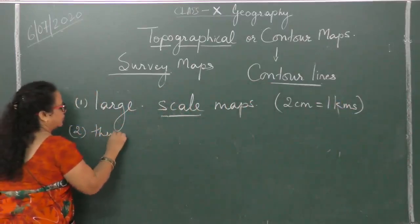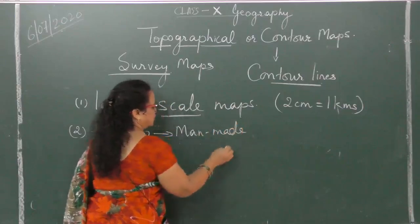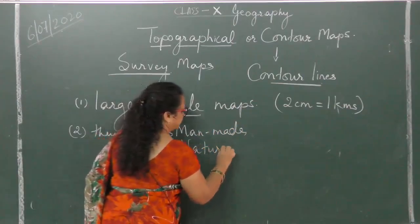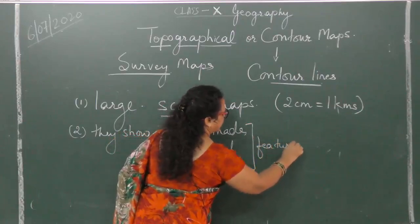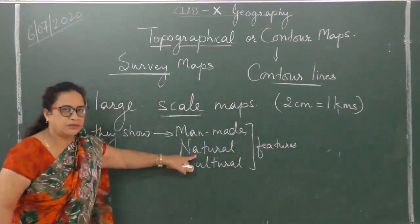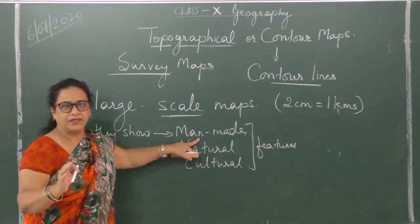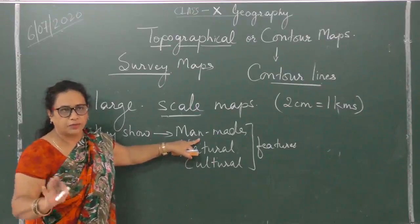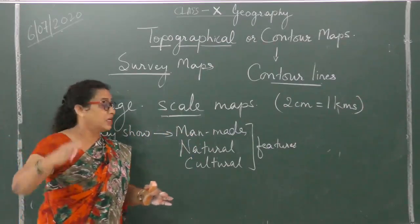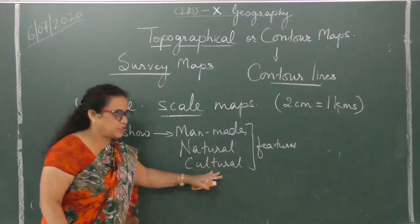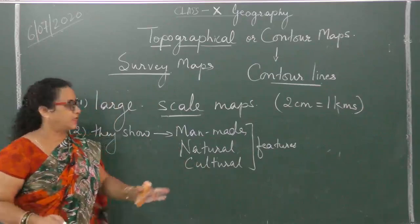These maps show three things: man-made, natural, and cultural features. Not only mountains, rivers, and plains are shown — if there is a hut, even that is shown on the map. If there is a very old tree which is a prominent landmark, even that will be shown. Cultural features means related to temples, churches, mosques, and even graveyards. So accurate and detailed they are.